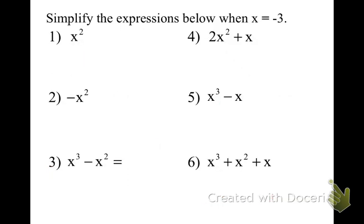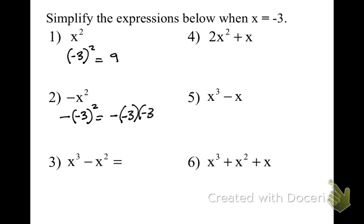Now we're putting it all together — adding a negative in and substituting. We're evaluating with x equals negative 3. Step 1, we substitute. The whole of x is negative 3. We're squaring that, so that makes 9. In this case, I've got a negative, then negative 3 times negative 3 — so that ends up being negative 9, because there are three negatives. The next one will be negative 3 to the third power, minus negative 3 squared.